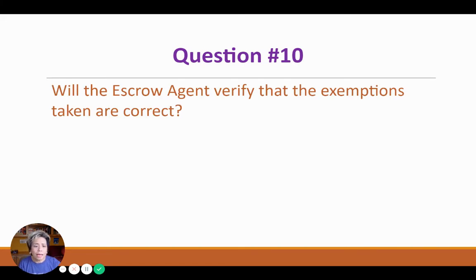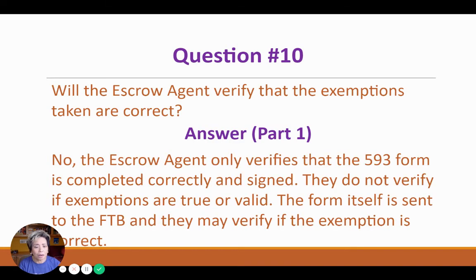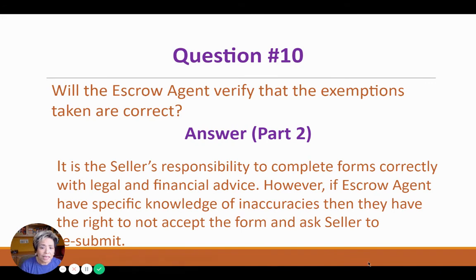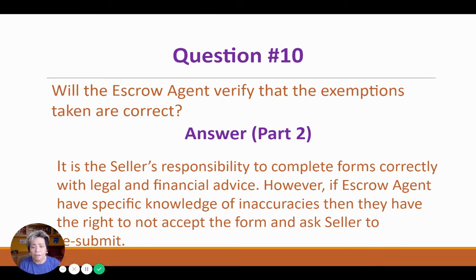Question number ten: Will the escrow agent verify that the exemptions taken are correct? Two parts to this answer. First part: no, the escrow agent only verifies that the 593 form is completed correctly and signed. They do not verify if the exemptions are true or valid. However, remember, the form itself is sent to the FTB and they may verify if the exemption is correct. Part two: it is the seller's responsibility to complete these forms correctly with their own legal and financial advice. However, if the escrow agent has specific knowledge of inaccuracies in that form, then they have the right to not accept this form and ask the seller to resubmit.